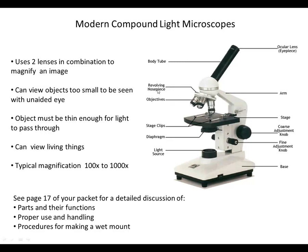Those objectives are attached to what's called a revolving nosepiece, which allows you to snap into place the appropriate objective lens depending on what you're looking at. The body tube is what the lens system is attached to, and the light travels through there from the objective lenses to the ocular lens.